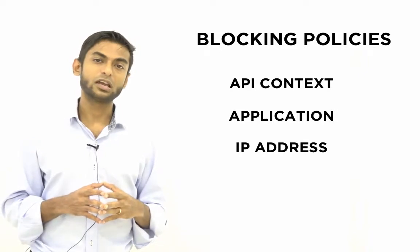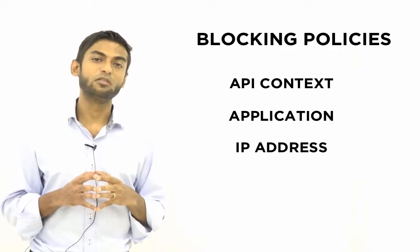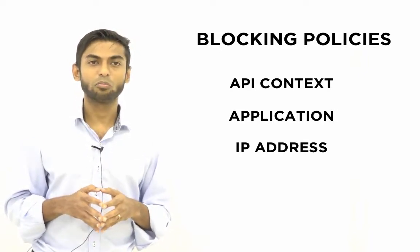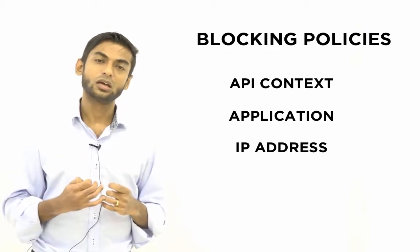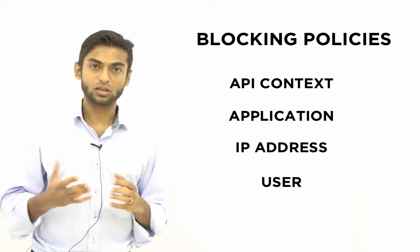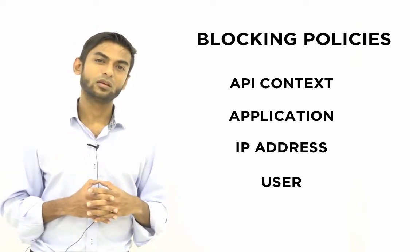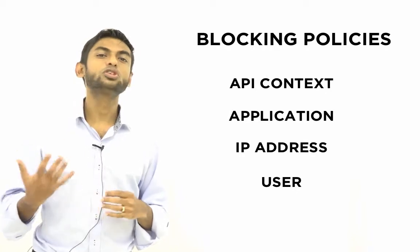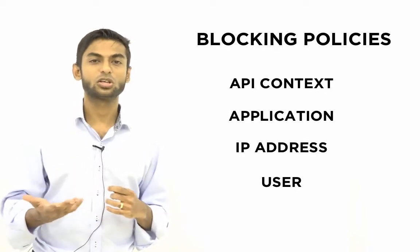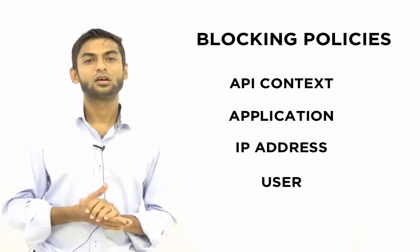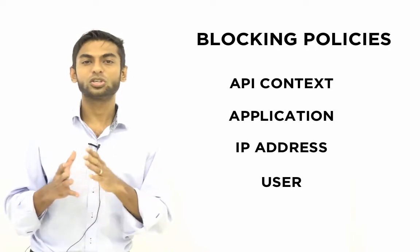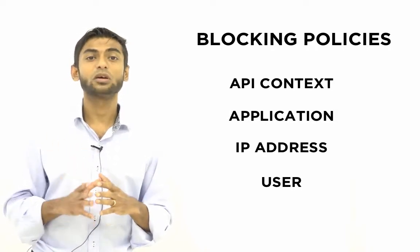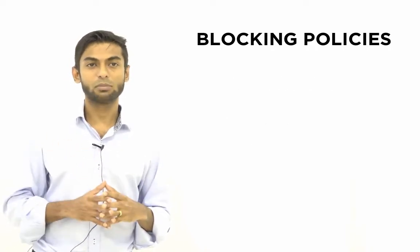The final attribute available out of the box for blocking conditions is the user. If a specific user makes an API invocation request and you have a blocking condition set up for that user, you can prevent that user from invoking the API.